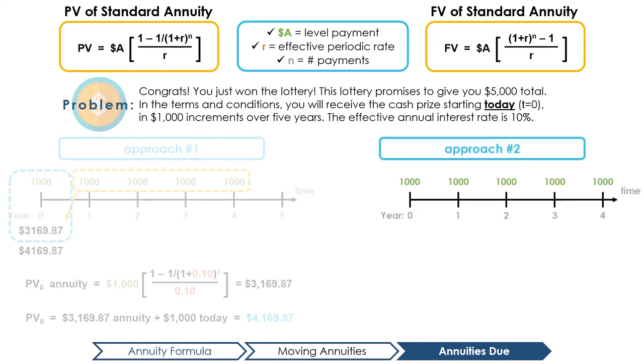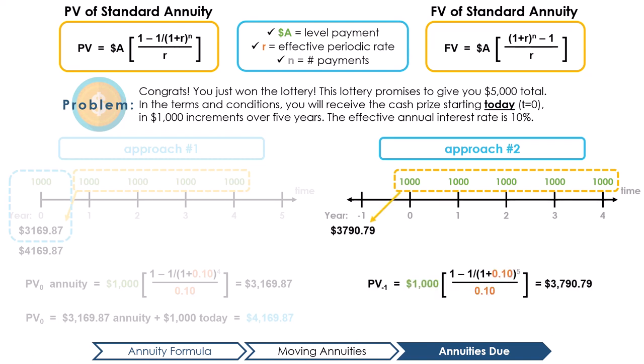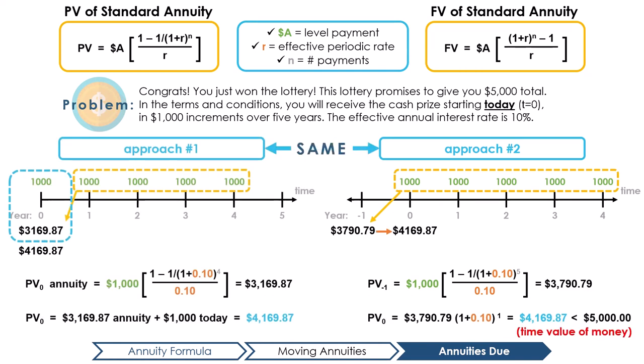The second method we can do is to use the PV of a five payment annuity, giving PV negative 1, and then compound up one period to get PV 0. Since we calculated the PV of a five payment annuity in the first example, $3,790.79, we just compound the value up one year and get a PV zero of $4,169.87.